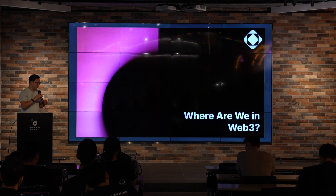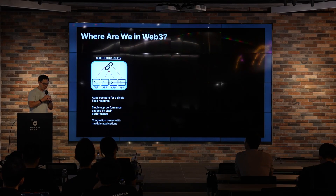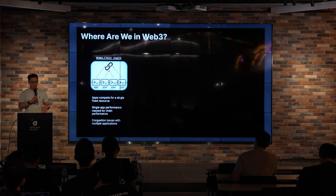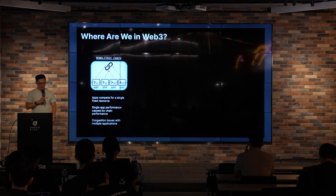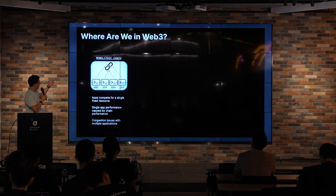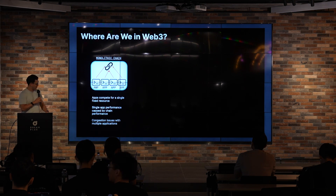So where are we in Web3 and why are we talking about horizontal scalability? Web3 is kind of in the early stages, and we can predict how Web3 development will evolve by looking at how things evolved in Web2. About two years ago, most application developers had a single-threaded application deployed on a monolithic chain, meaning all different applications were competing for a single monolithic chain. Application performance was capped by the performance of that chain and there were definite congestion issues.